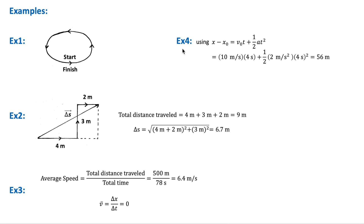Consider a car initially traveling at 10 m/s in a straight line, which then accelerates uniformly for 4 seconds at a constant rate of 2 m/s². We want to calculate how far the car has traveled during that time. Since this is one-dimensional motion with constant acceleration, we use the third kinematic equation. Substituting v₀, t, and a, the displacement equals 56 meters.